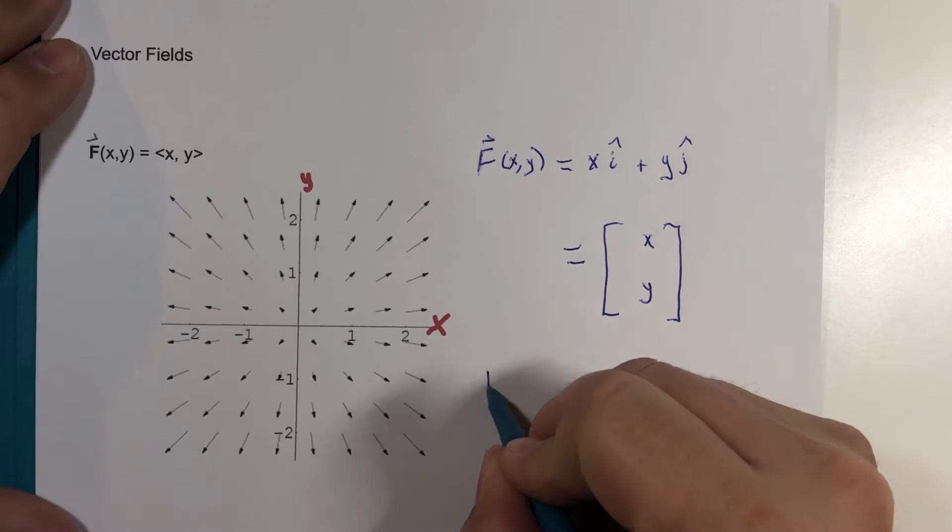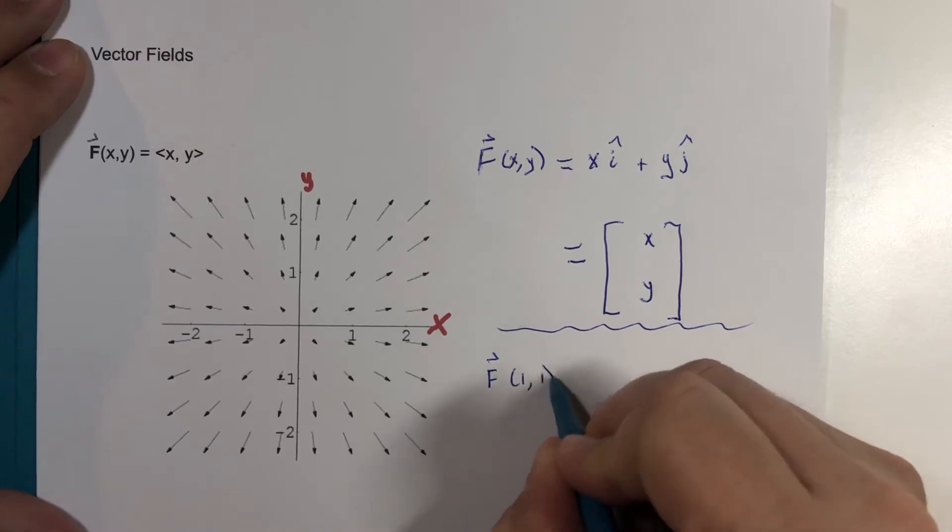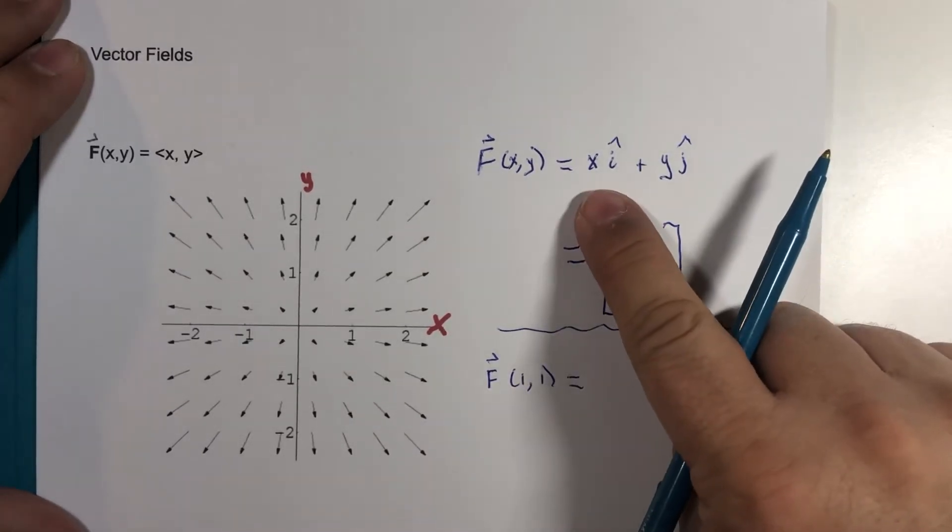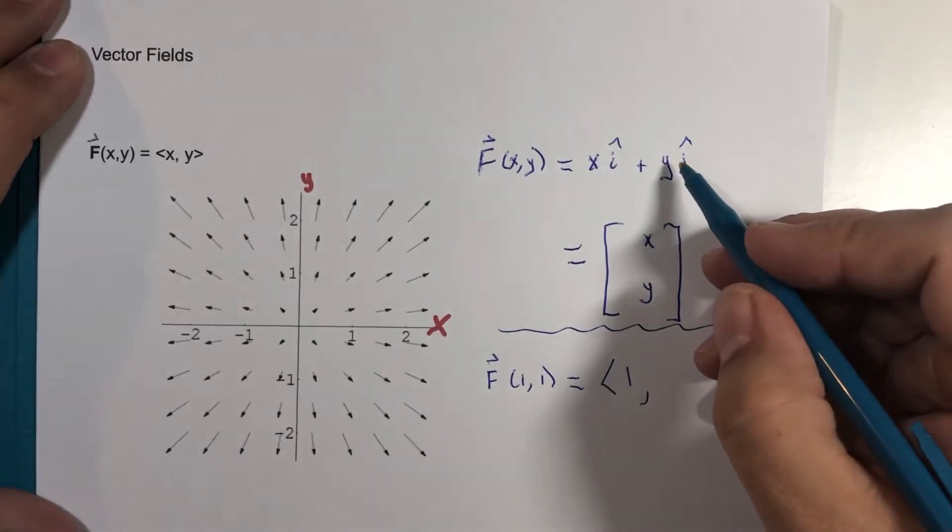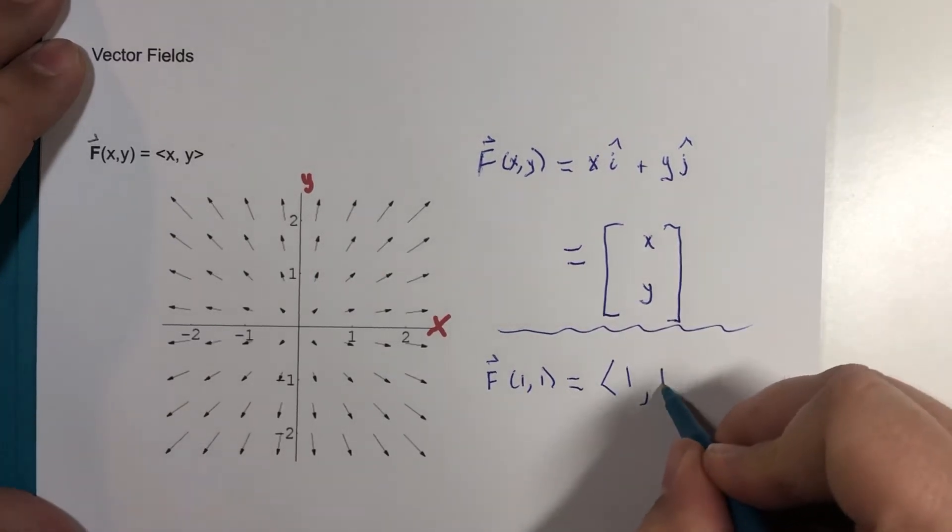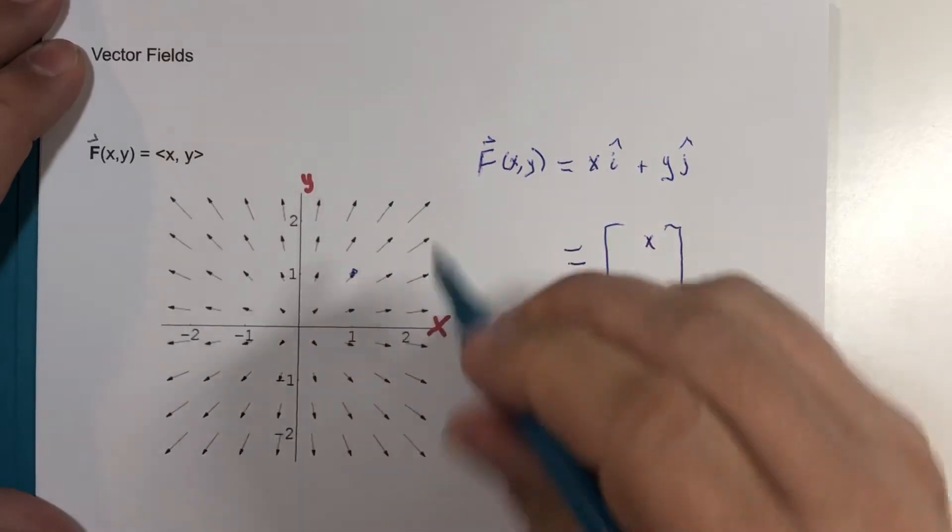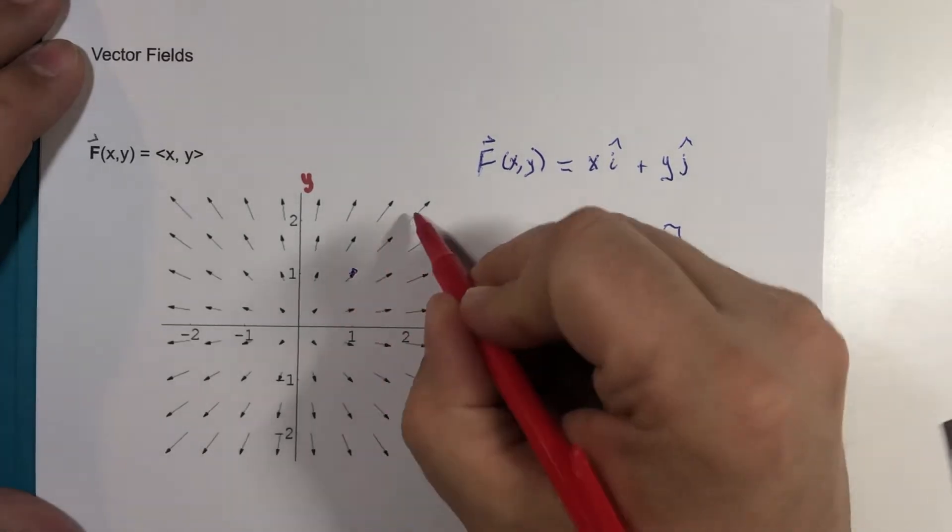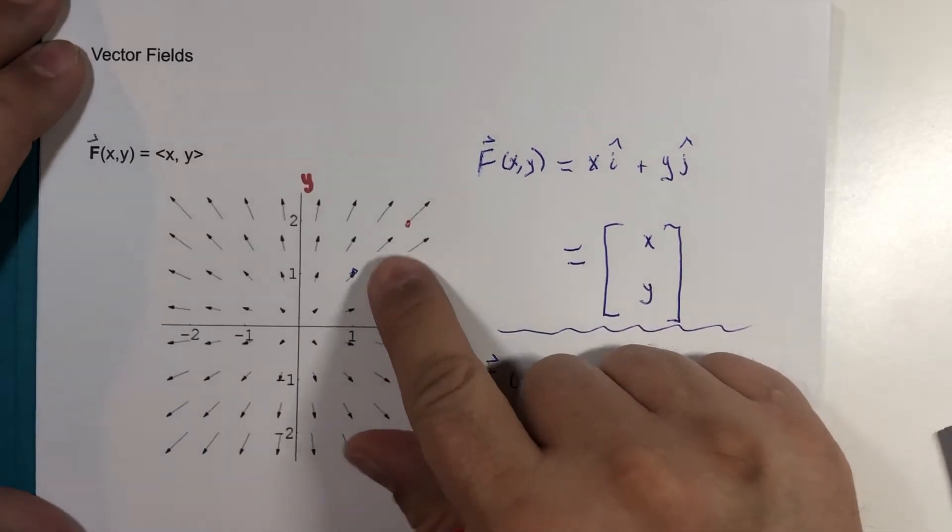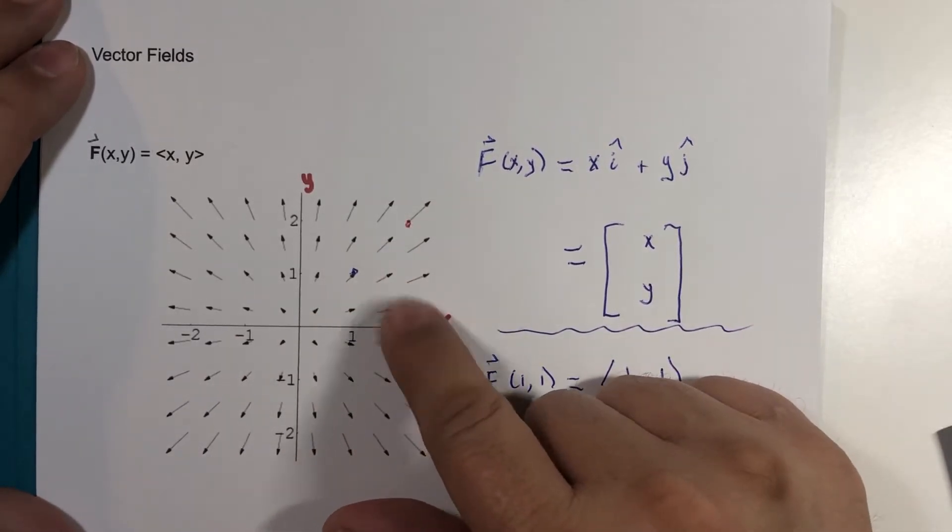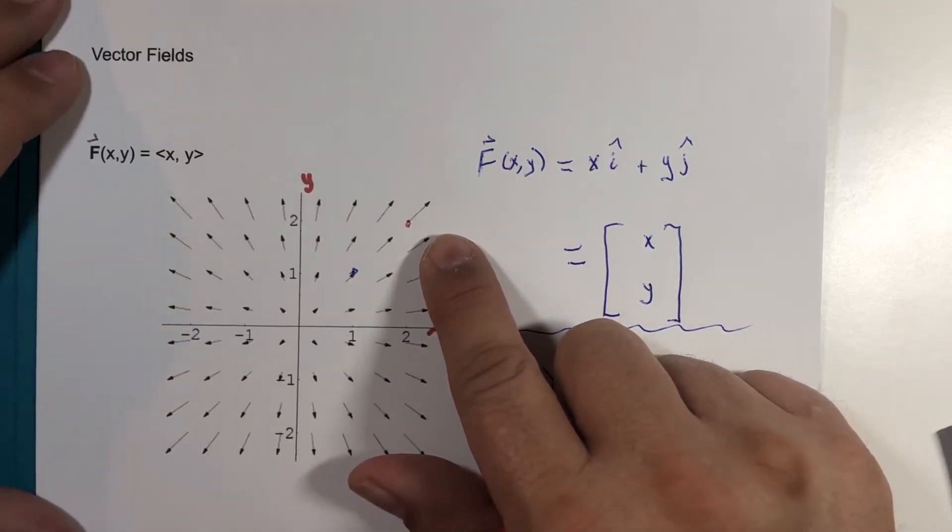So if I were to want to generate the vector at the point 1 comma 1, this just says the X component is the X coordinate, and the Y component of the vector is the Y coordinate at that point. If I really were to draw that vector at the point 1, 1 here, it should extend to about here, because that's where 2 and 2 is. So I want you to see that they have not drawn these vectors to scale. What they've actually done is scaled them down so you can see where smaller ones and larger ones would be. A very common practice.